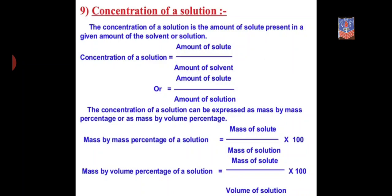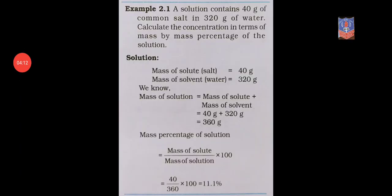Let us discuss Example 2.1 from your NCERT textbook page number 17. A solution contains 40 grams of common salt in 320 grams of water. Common salt is the solute and water is the solvent. So the mass of solute, that is salt, is 40 grams, and the mass of solvent, that is water, is 320 grams.